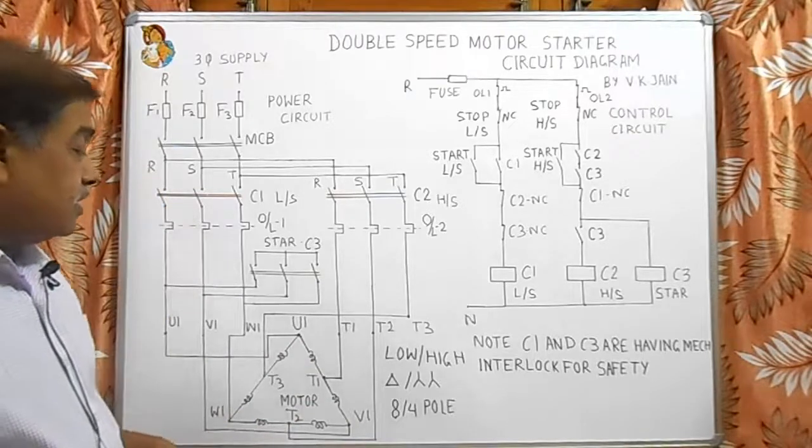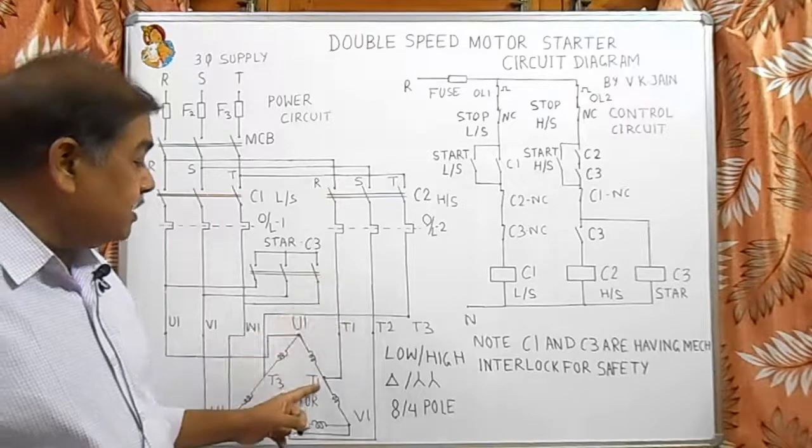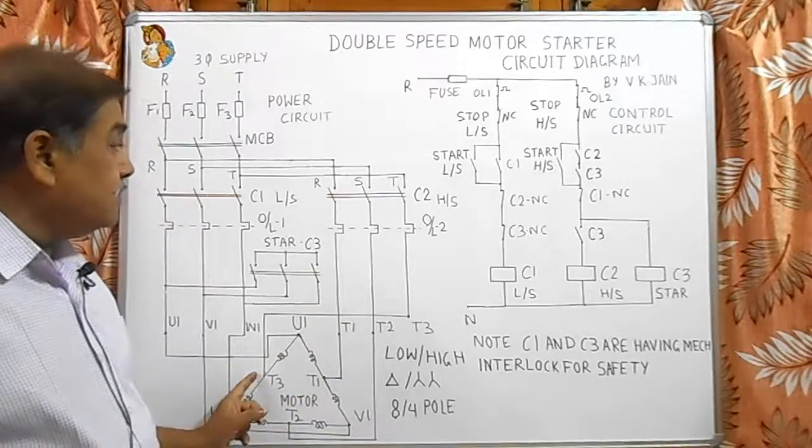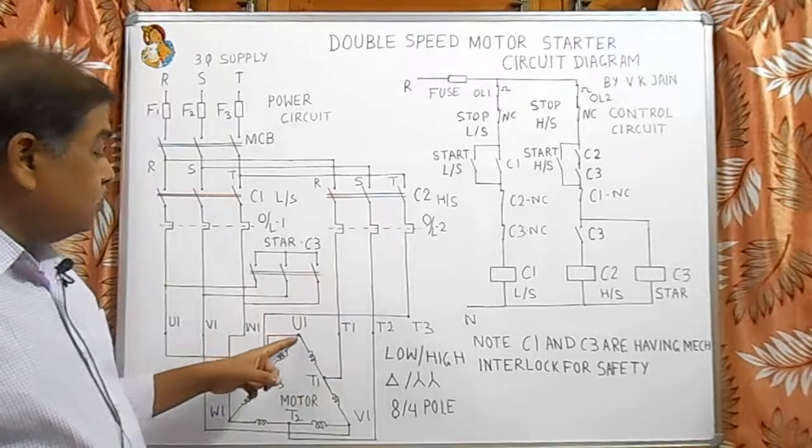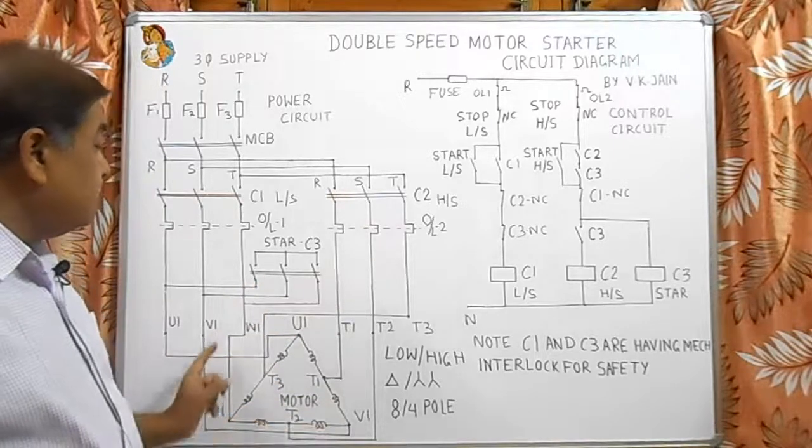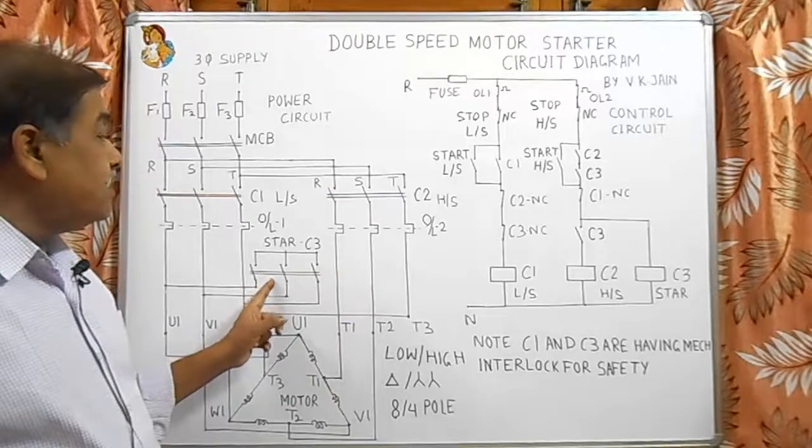For running at high speed we have to give supply to the terminal number T1, T2 and T3 with the help of C2 contactor, and U1, V1 and W1 are short circuited with the help of C3 contactor.